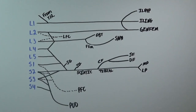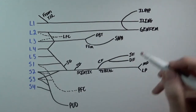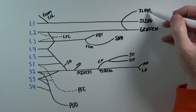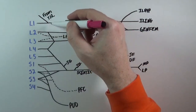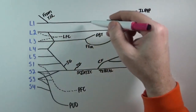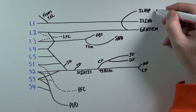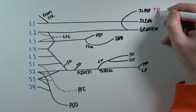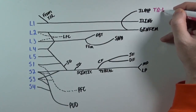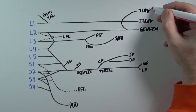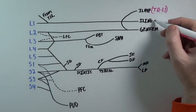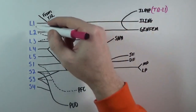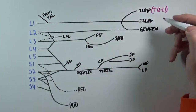If you're required to know the nerve root levels, you can use this picture to help you remember the levels for each nerve. This first nerve, the iliohypogastric nerve, you can see it originates from T12 and L1. The ilioinguinal nerve comes straight from L1.